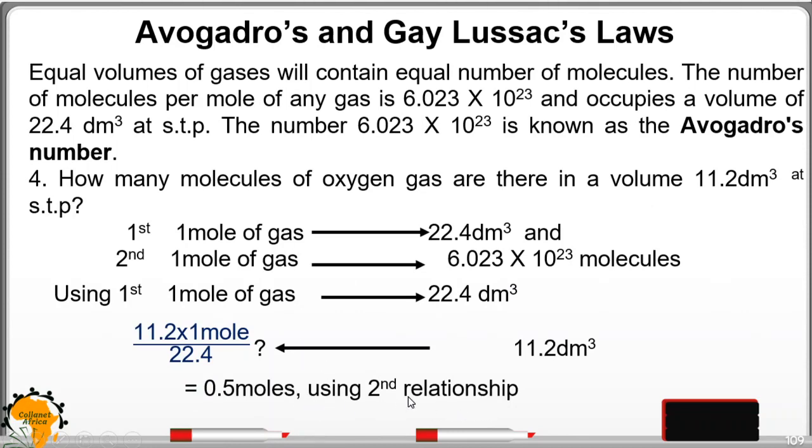To know the number of molecules, we first of all need to use the first relationship, one mole of gas occupy that. So what about 11.2? 11.2 will have 0.5 moles. Now, using the second relationship, we know one mole of a gas has this, so what about 0.5? If you do a cross multiplication, you get the number of molecules to be that.